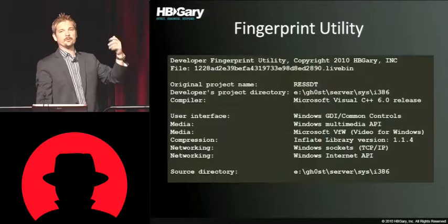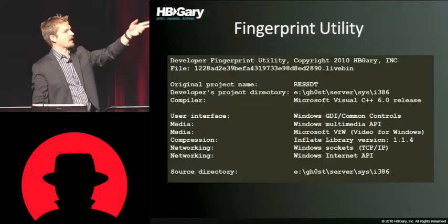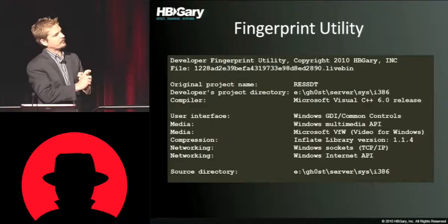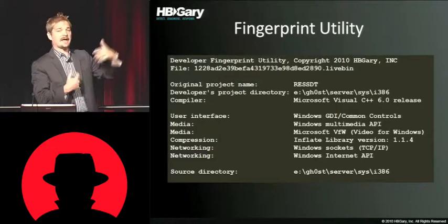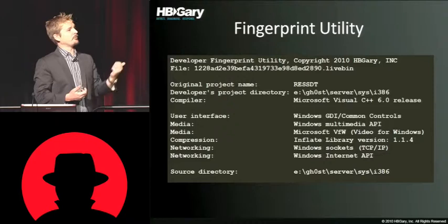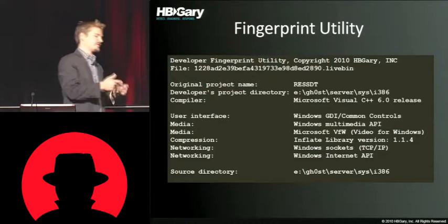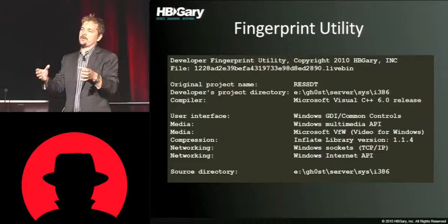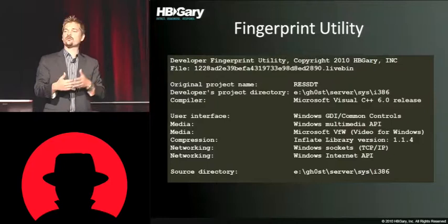Here's an example output. We dropped in Ghost in this case — it actually figured out the original project name, the developer's project directory where they did the actual development from, what compiler, whether or not it has a user interface embedded, the version number, whether or not there's any compression capabilities, what kind of networking it uses, etc. What's cool about this is when you can auto-process in bulk many, many binaries — 10,000 at a time — they're all stored in a database. And then if you run another binary, it'll tell you with percentage of match what it's most similar to in your data set.